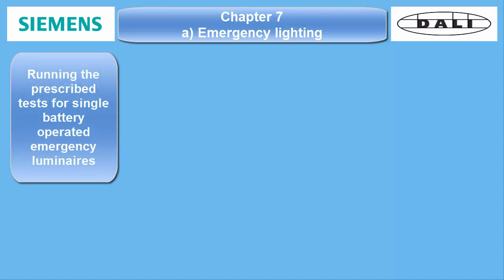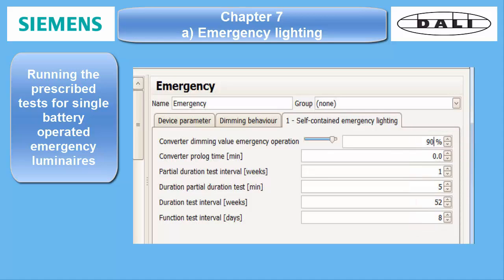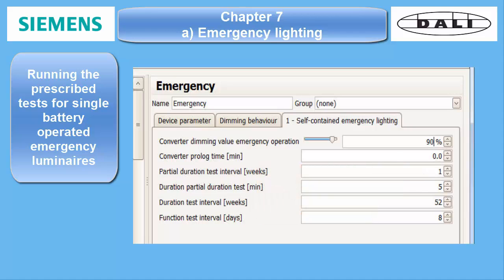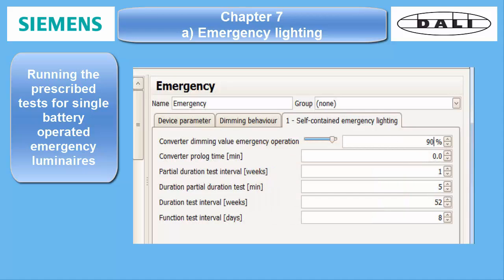3. Running the prescribed recurrent checks. The settings for the checks must be made individually for each ballast of type 1. As such ballasts also have an internal counter which will be set by the DALI gateway, they will start the timers for the checks right after download. The automatic check runs will be carried out according to the parameter settings and run randomly on the calculated days — especially the endurance tests, not all at the same time, as this can cause severe problems in case of a real emergency.